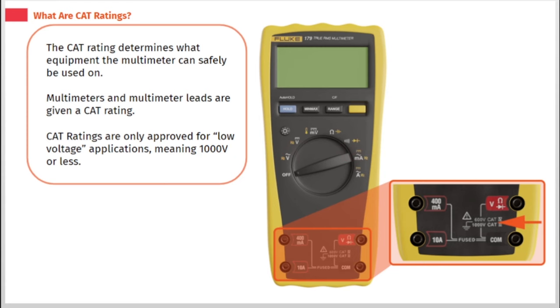The CAT rating determines what equipment the multimeter can safely be used on. Multimeters and multimeter leads are given a CAT rating. CAT ratings are only approved for low voltage applications, meaning 1000 volts or less.